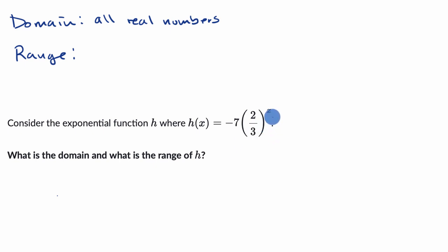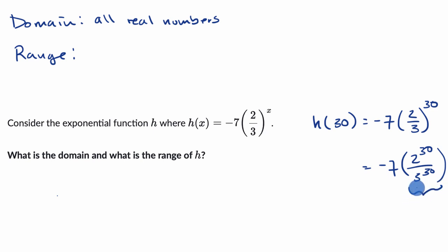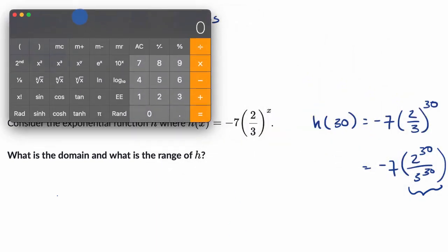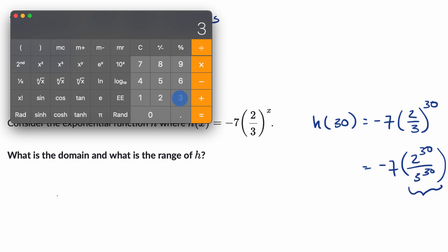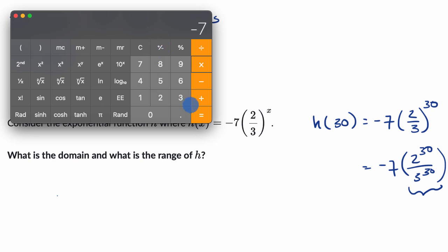This one is interesting. What happens when x gets really, really large? Let's pick a large x — let's say h of 30, which isn't even that large. That's negative seven times two-thirds to the 30th power, which equals negative seven times two to the 30th over three to the 30th. Three to the 30th is much larger than two to the 30th, so this number is awfully close to zero. Let me take a calculator: two divided by three is 0.6 repeating, and if I take that to the 30th power, it equals a very, very small positive number. But then we multiply by negative seven, and it equals a very, very small negative number.